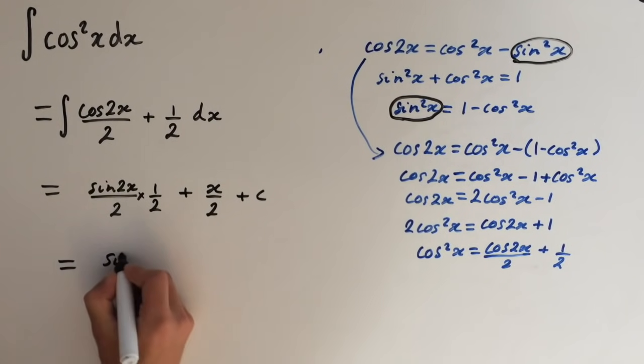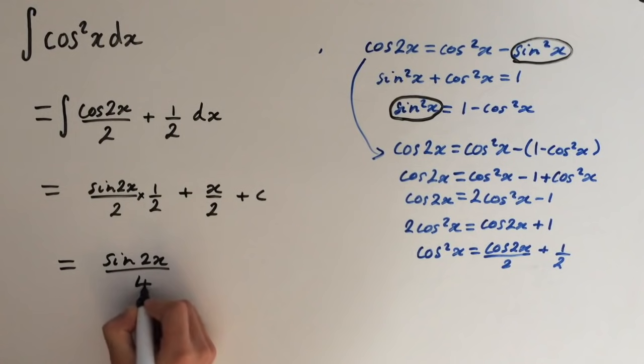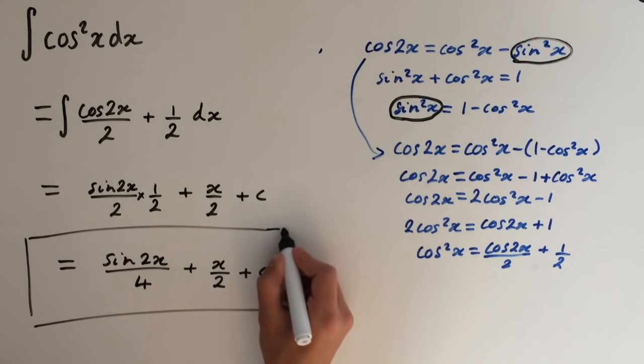This gives us sine of 2x over 4 plus x over 2 plus c. So there you go, the integral for cosine squared of x.